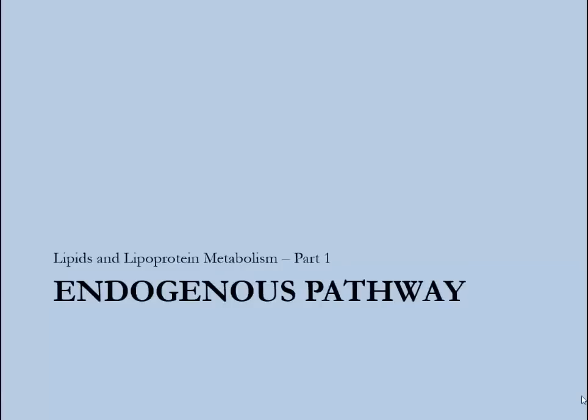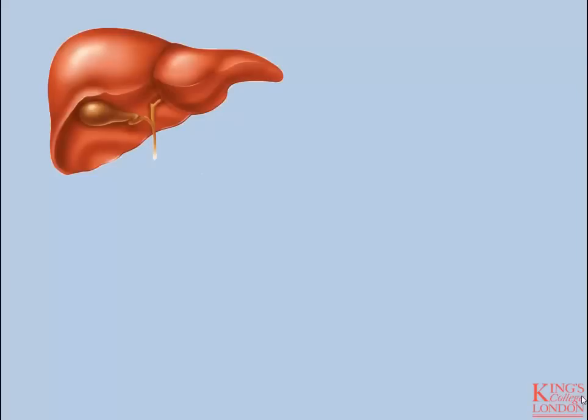The endogenous lipid transport pathway also involves the liver, however this is independent of the gastrointestinal tract. We are not dealing with cholesterol and triglyceride transport coming from dietary sources. This is hepatically derived lipid, which is being packaged into VLDL particles and then transported throughout the body to deliver both triglyceride and, to some extent, cholesterol to various cells and tissues.